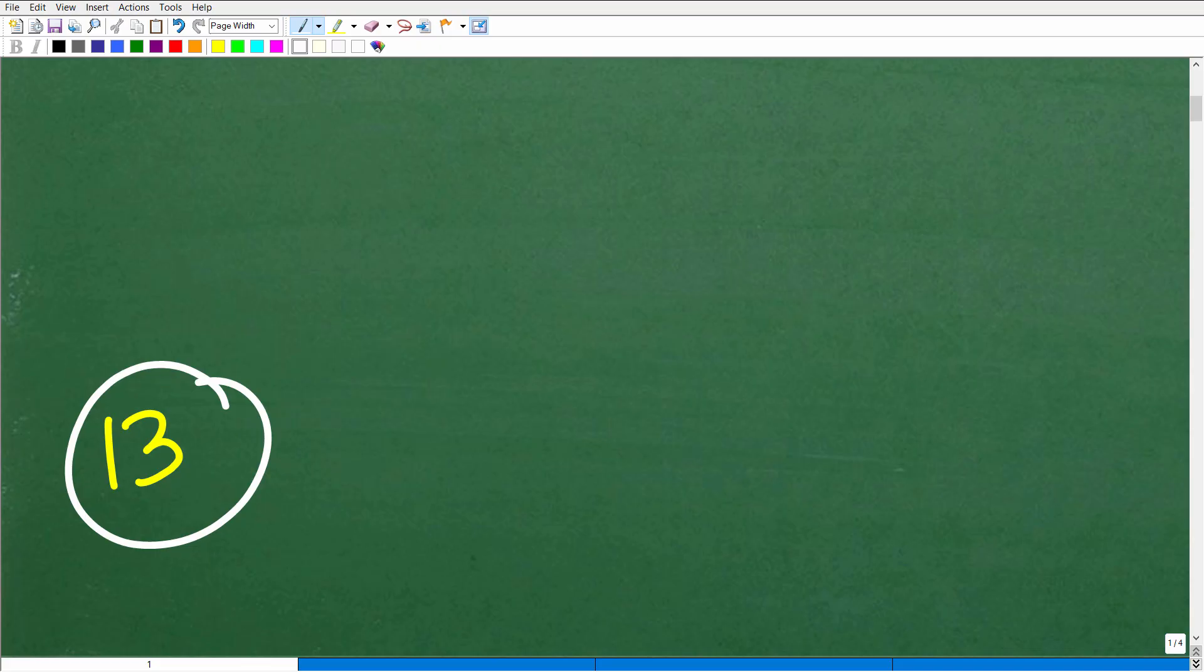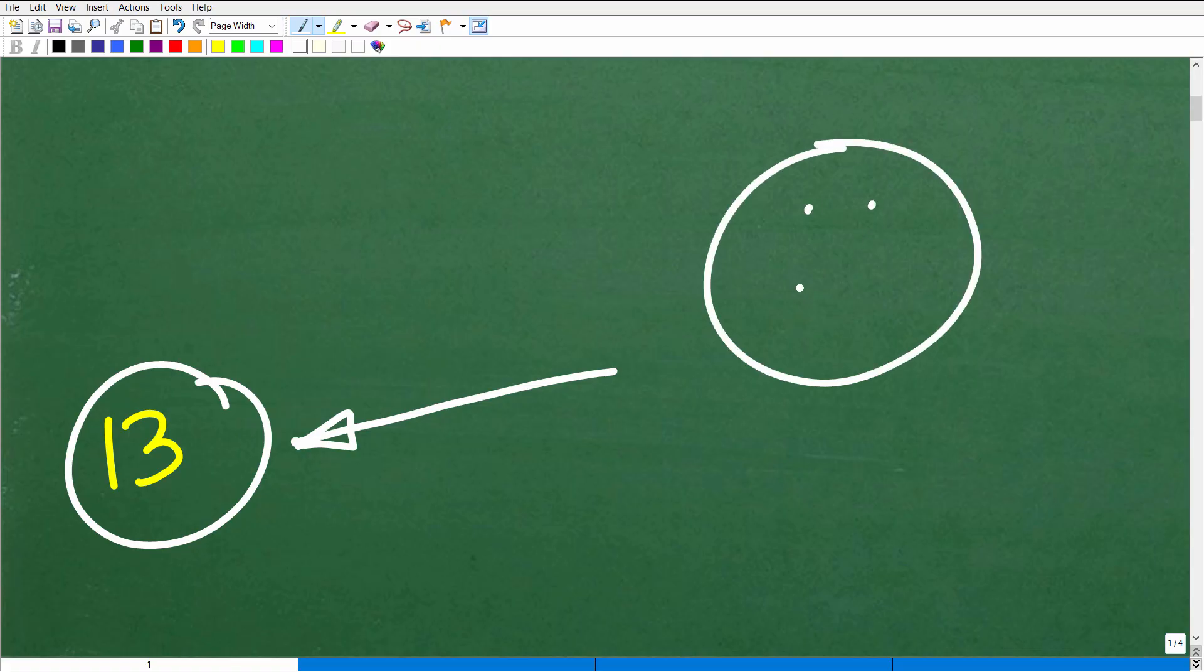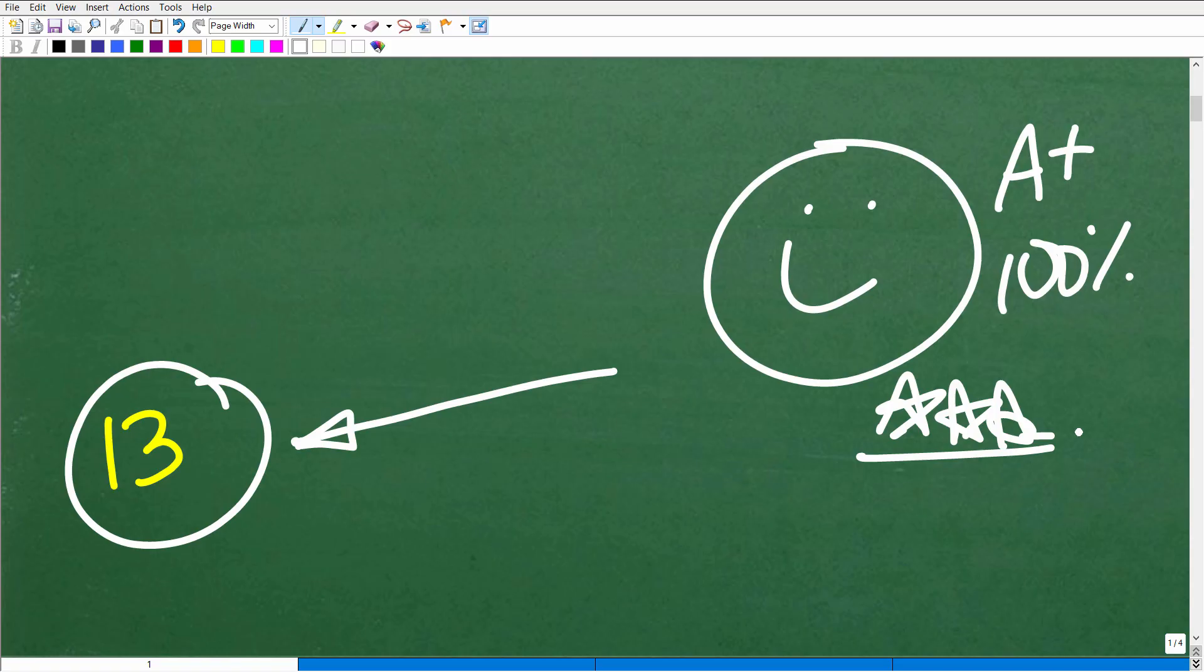Now, if you didn't get 13, you're like, wait a minute. I think I did this right. I know what I'm doing. And you got a different number. You might be saying to yourself, this YouTube math man, he's wrong. I'm right. Well, listen, I'm glad that you have strong conviction in your answer. However, I'm going to show you exactly why 13 is the correct answer.